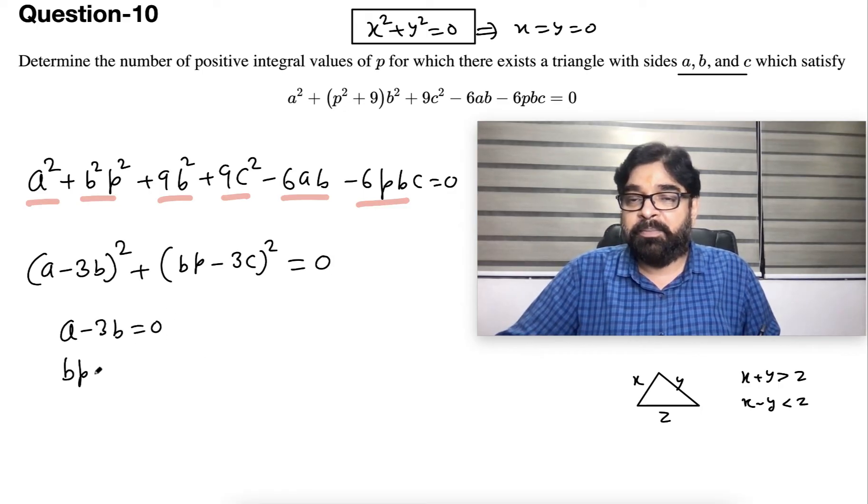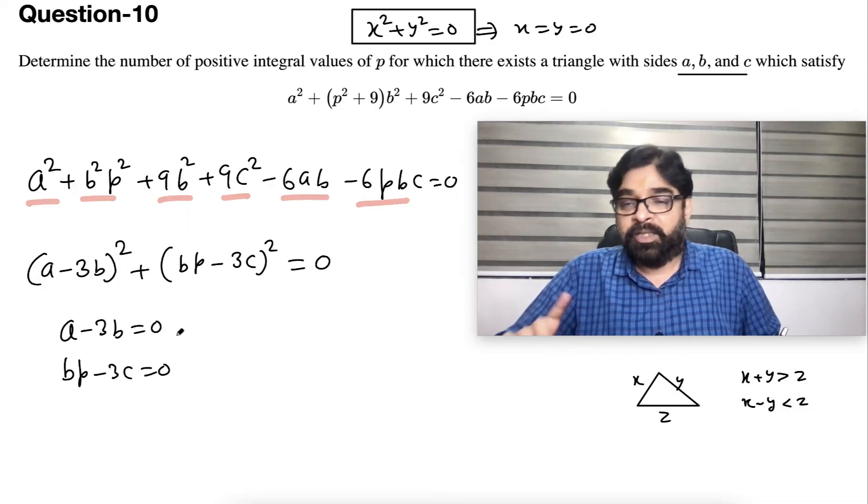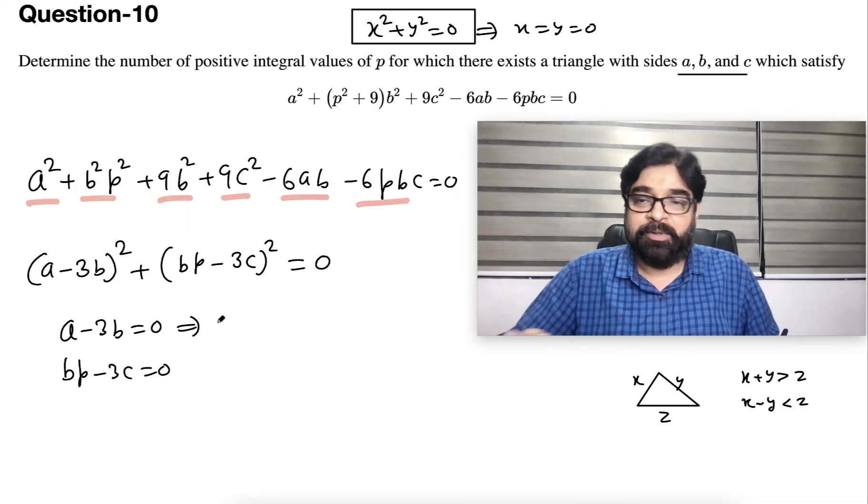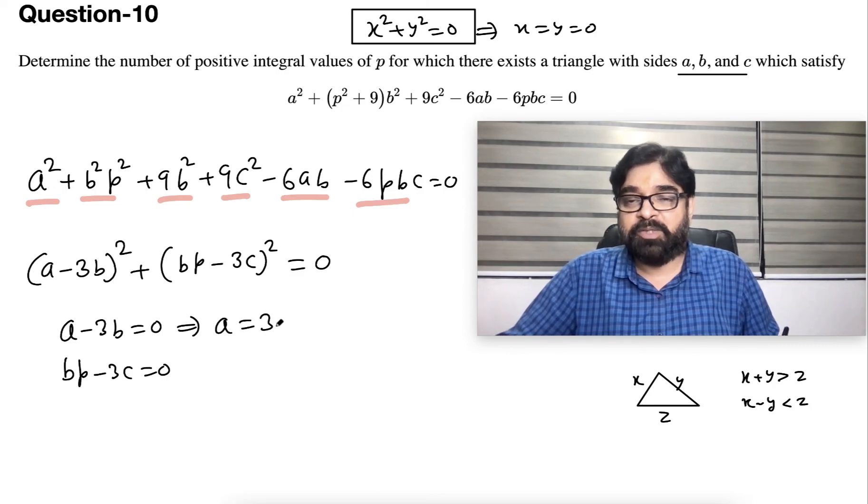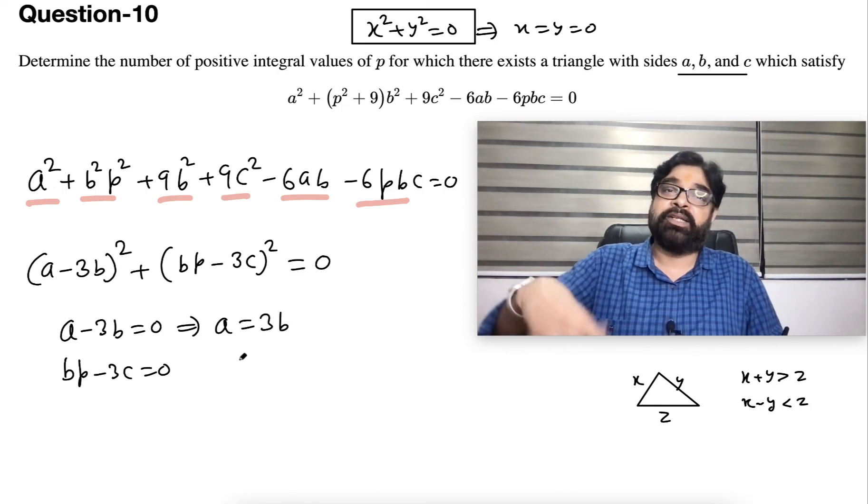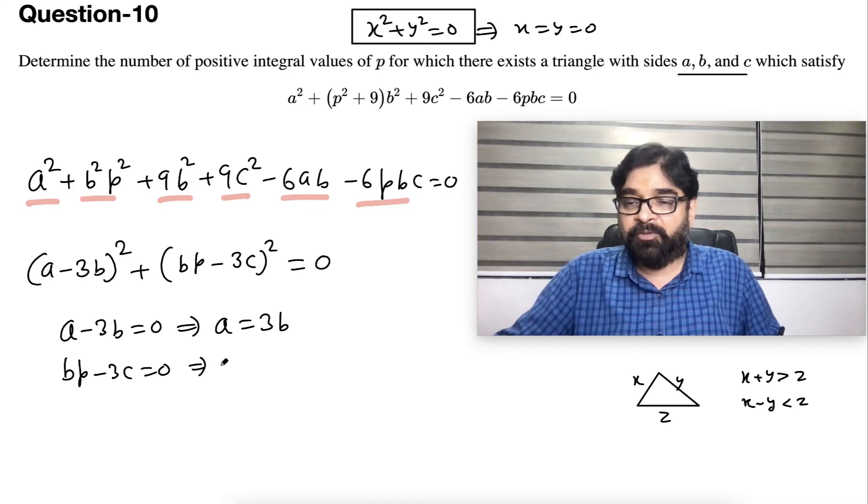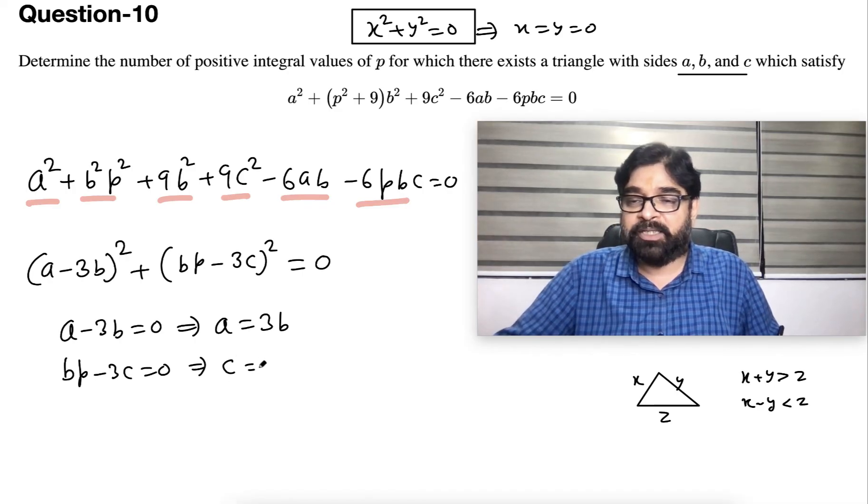And pb - 3c = 0. Now I can get the relation between the sides: a = 3b, means one side length is three times the other. And from here also, c = (p/3)b.